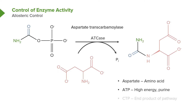In addition to providing high energy, ATP is also used in making RNA and DNA. And so too is the end product of the pathway initiated by ATCase, because ATCase initiates a pathway to synthesize CTP. The end product of this pathway is CTP, and CTP is also used to make RNA and DNA.